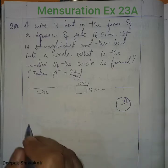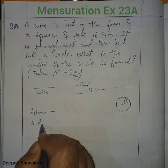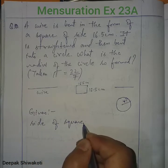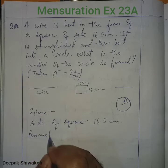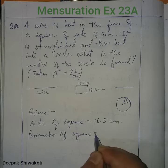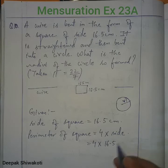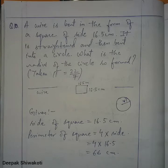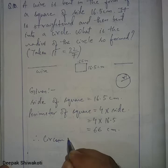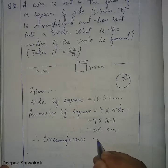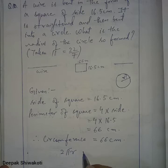Given: side of the square equals 16.5 centimeters. Therefore, perimeter of the square equals 4 × side, which is 4 × 16.5 = 66 centimeters. The perimeter of the square will be equal to the circumference of the circle, so the circumference of the circle is also 66 centimeters.